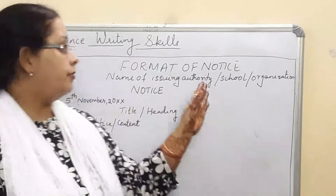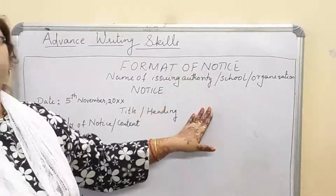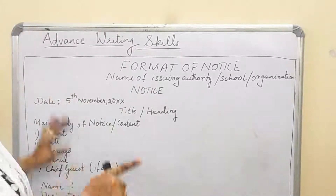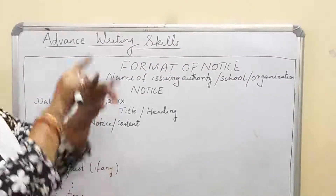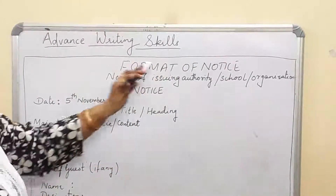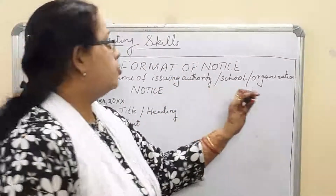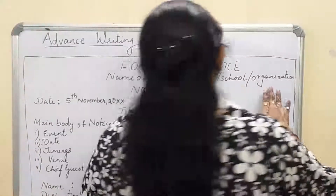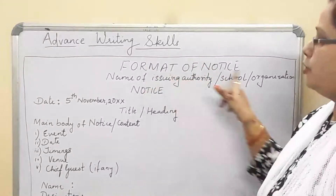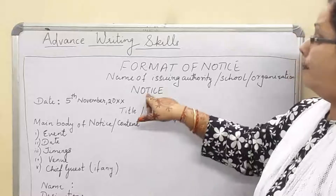This is the format of the notice — how to write it, where to underline, what to do. First thing: whatever you write, write it in a box. Now, the format of a notice begins with the name of the issuing authority — the school or organization. That comes under your format and you have to underline it. Next, you write 'NOTICE' in block letters, and this also needs to be underlined.